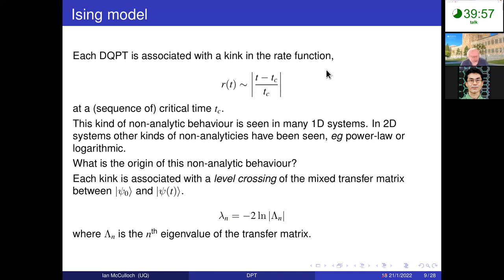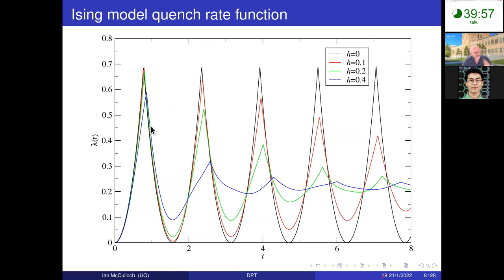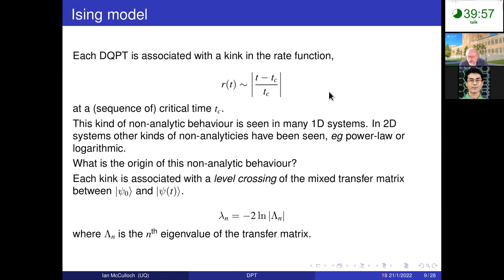Something important to note is that fairly generic behavior gives an exponent associated with these dynamical quantum critical points equal to one — that is, linear behavior on either side of the cusps. Until relatively recently, it was probably suspected that this was the only possible behavior for these kinds of dynamical quantum critical points in 1D, though in 2D systems some logarithmic and other powers have been observed.